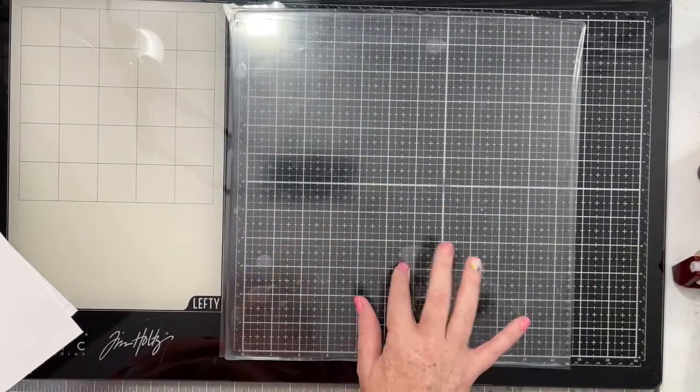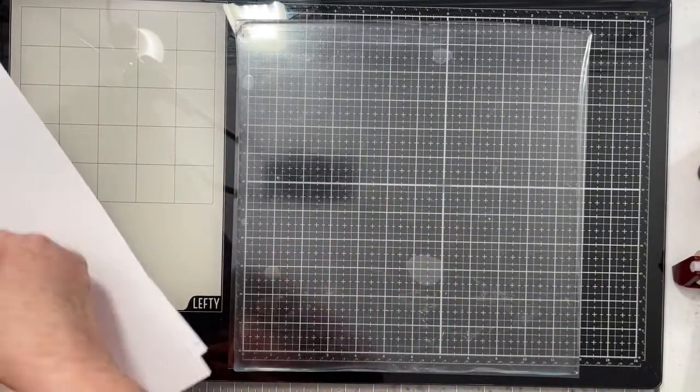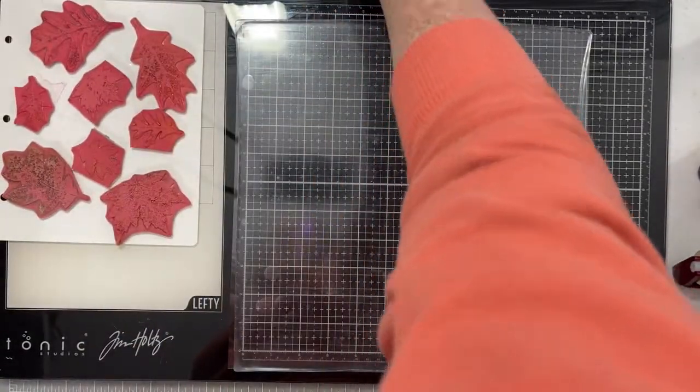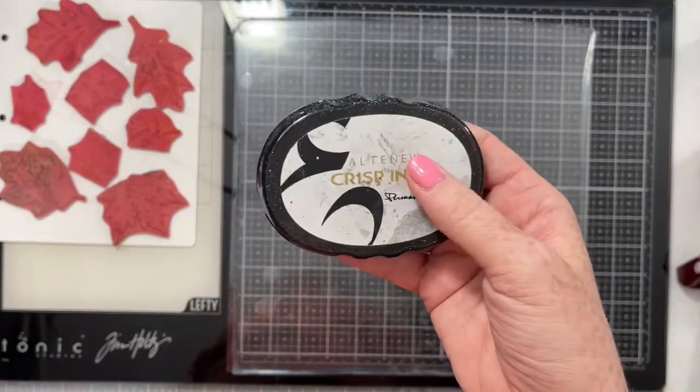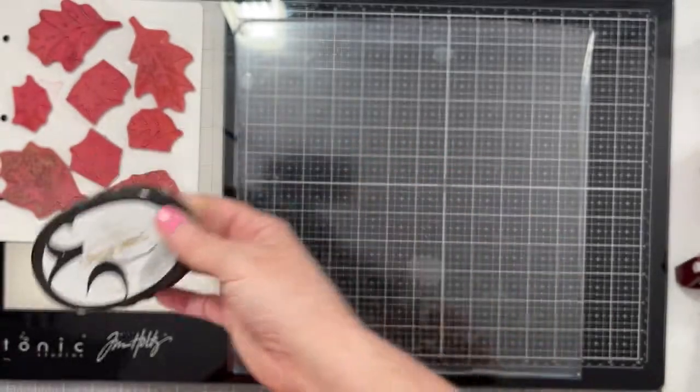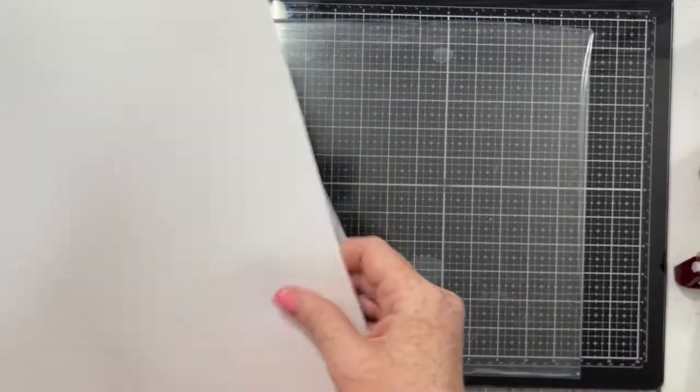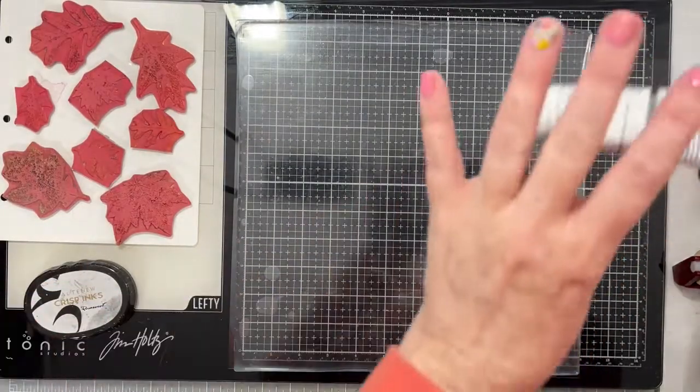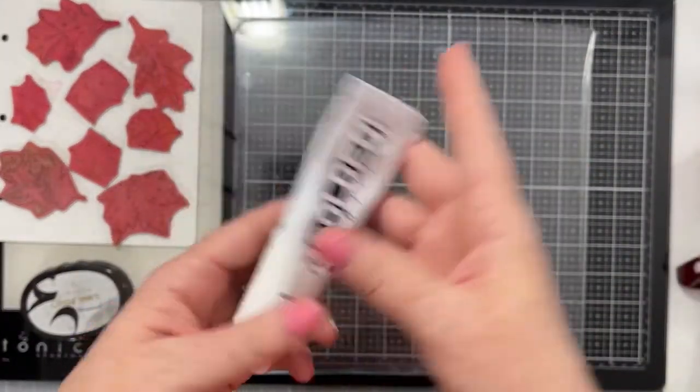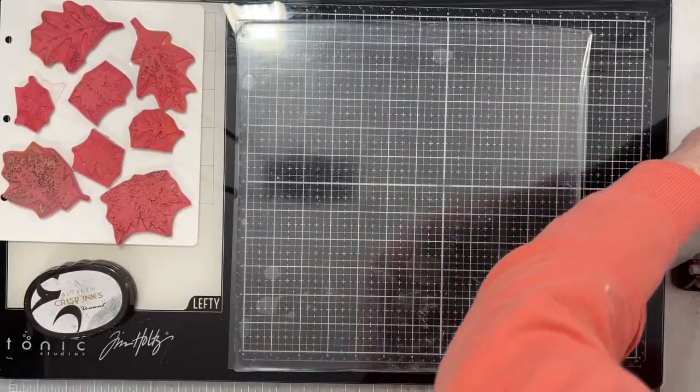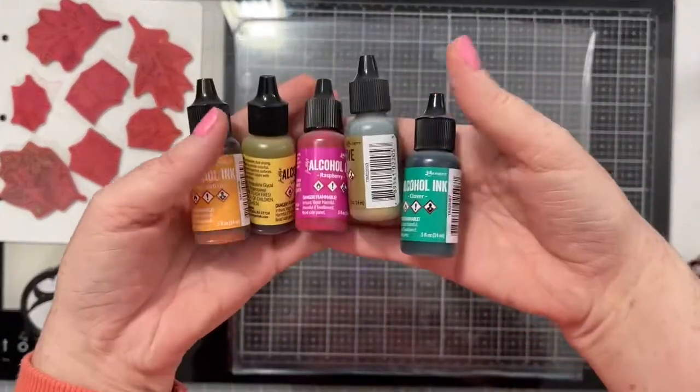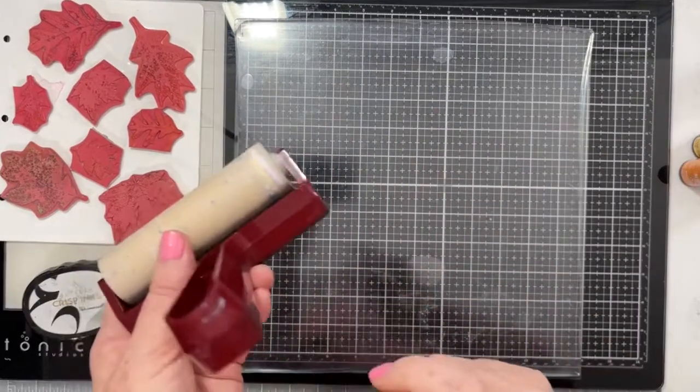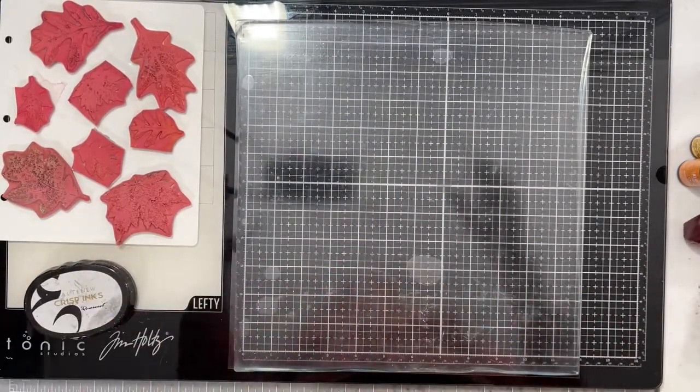So I have a 12 by 12 gel press here on my desk. I have these beautiful fall leaves stamps from Tim Holtz, some permanent black ink, some sheets of white cardstock. This is just coconut swirl cardstock, nothing special, some golden white heavy body acrylic paint, and lots of alcohol inks in some fall colors. And I'm going to pull some prints today. And there is my speedball brayer.